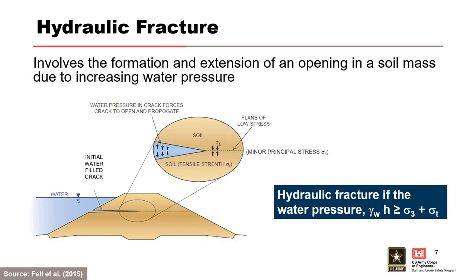Hydraulic fracture involves the formation and extension of an opening in a soil mass due to increasing water pressure. An initial opening forms on the upstream side of the core due to a defect or crack. The water pressure in the initial water-filled crack increases, for example due to an increase in reservoir level. If the water pressure in the crack exceeds the sum of the minor principal stress and tensile capacity of the soil at the crack tip, then the crack is jacked open and it extends further into the core. The process progresses from upstream to downstream. Hydraulic fracturing can also occur due to the use of high pressures when drilling with water or air, or by pressure grouting.